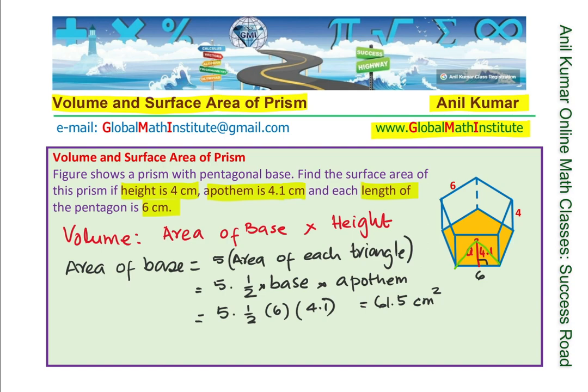Once we have the area of the base, we can find the volume. Volume is area of the base times height. That would be 61.5 cm² times the height of 4 cm. So we multiply this by 4 to get our answer, which is 246 centimeters cubed. We find area of the base and multiply by height to get the volume.